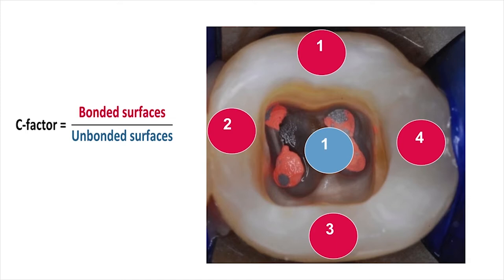When filling an endodontic access cavity with composite resin, we are dealing with a very high C-factor configuration where the shrinkage stress will be very high. The C-factor is determined by dividing the number of bonded surfaces by the number of unbonded surfaces, as shown on this slide. In most endodontic access cavities we will have a C-factor of 4 when we do the calculation.